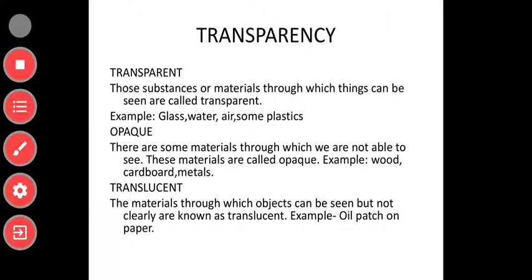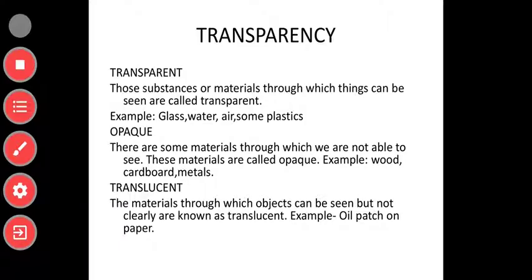The last one is translucent. Materials through which objects can be seen but not clearly are known as translucent. Example: an oil patch on paper. If you wet a paper you can see a little through it but not clearly. Similarly, if oil falls on paper you can see slightly through the oil patch but not clearly. Butter paper used in baking is also translucent.